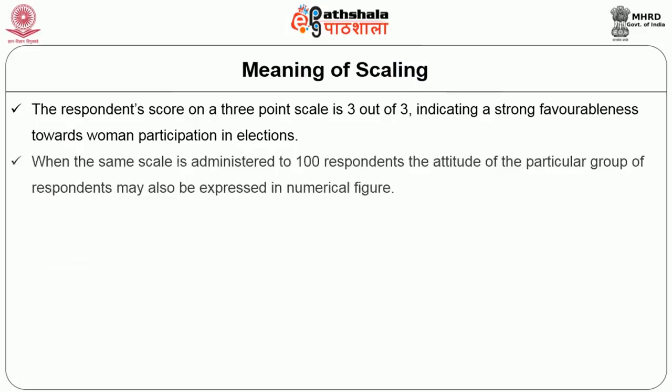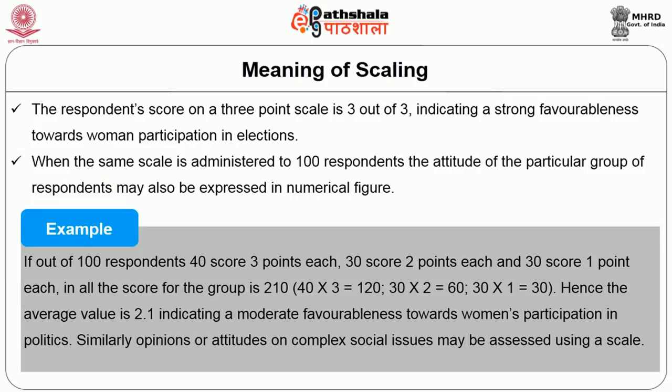When the same scale is administered to a hundred respondents, the attitude of the particular group of respondents may also be expressed in numerical figures. For example, if forty out of hundred respondents score three points each, thirty respondents score two points each, and another thirty respondents score one point each, the total score for the group is 210. Hence, the average value for hundred respondents would be 2.1, indicating a moderate favorableness towards women's participation in politics. Similarly, opinions or attitudes on complex social issues may be assessed using a scale.